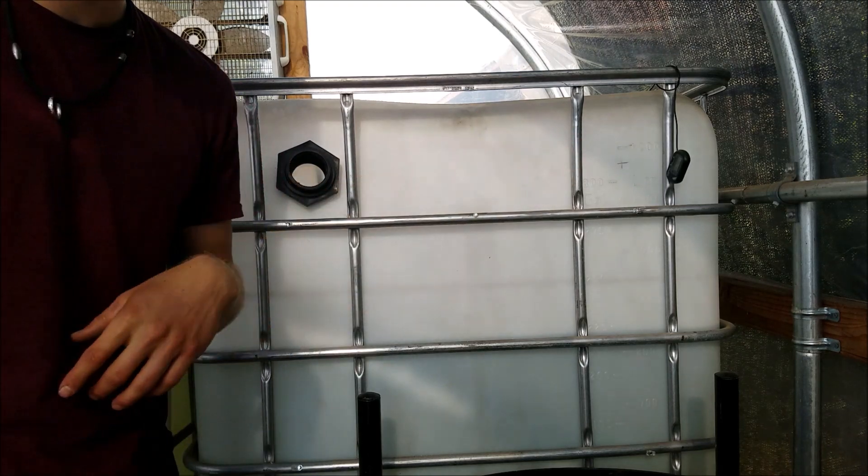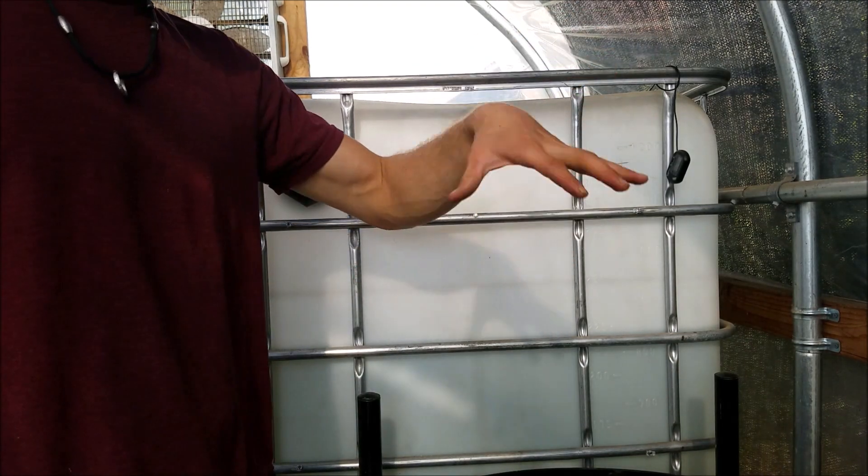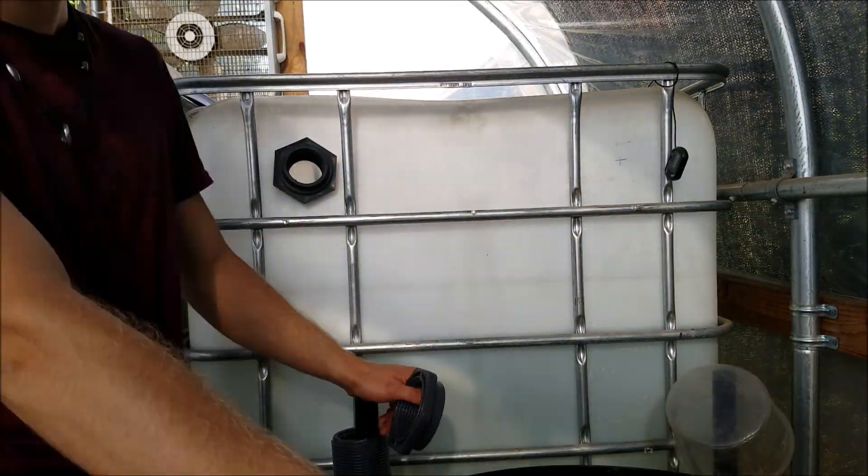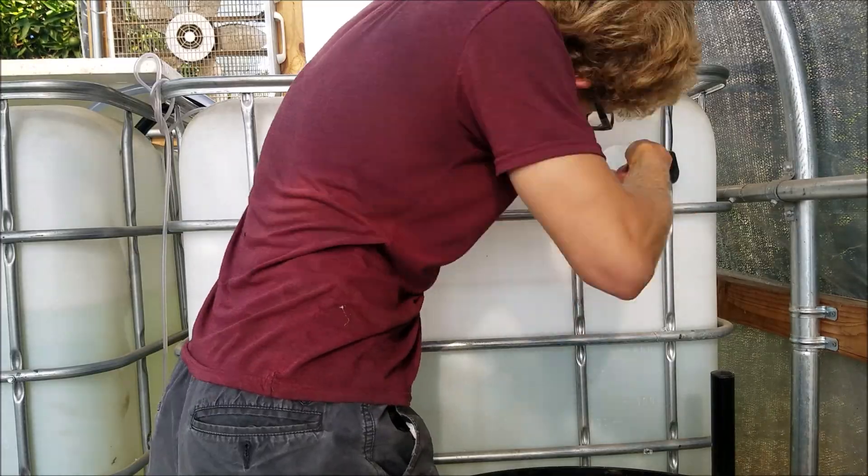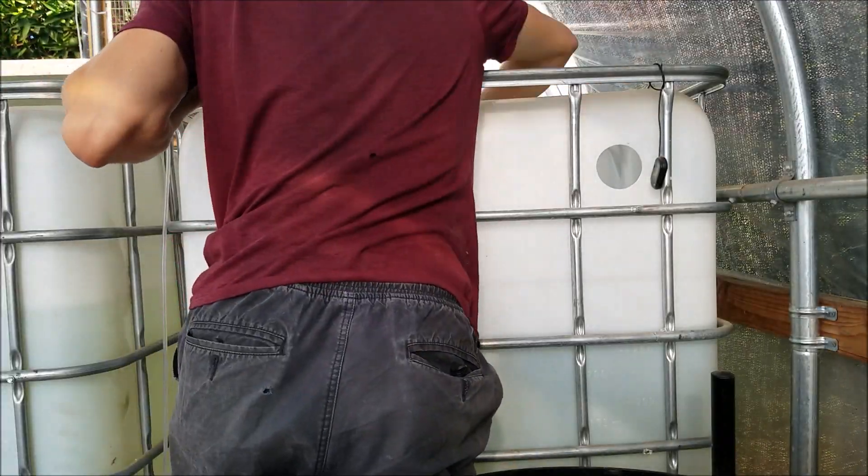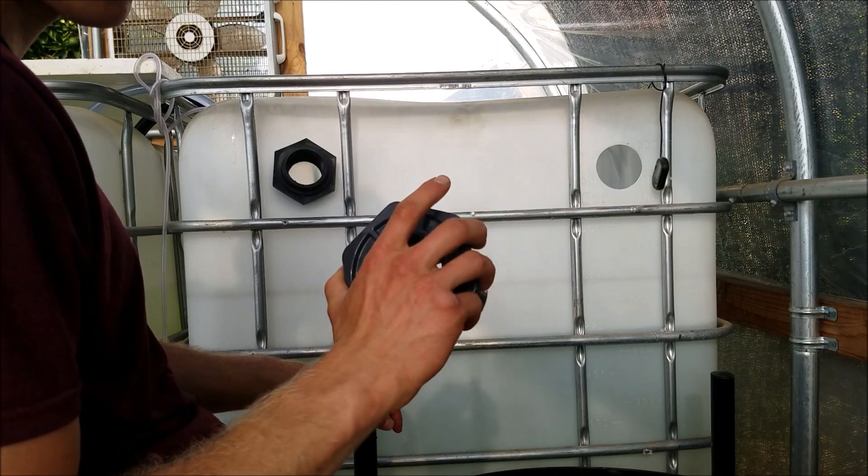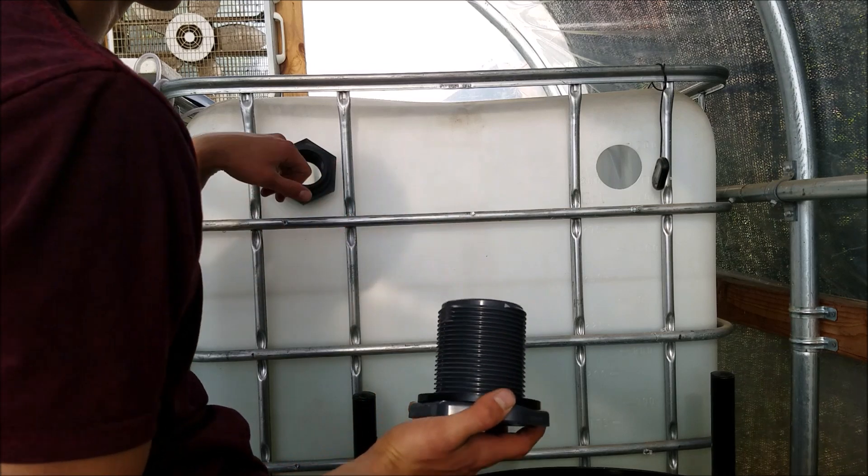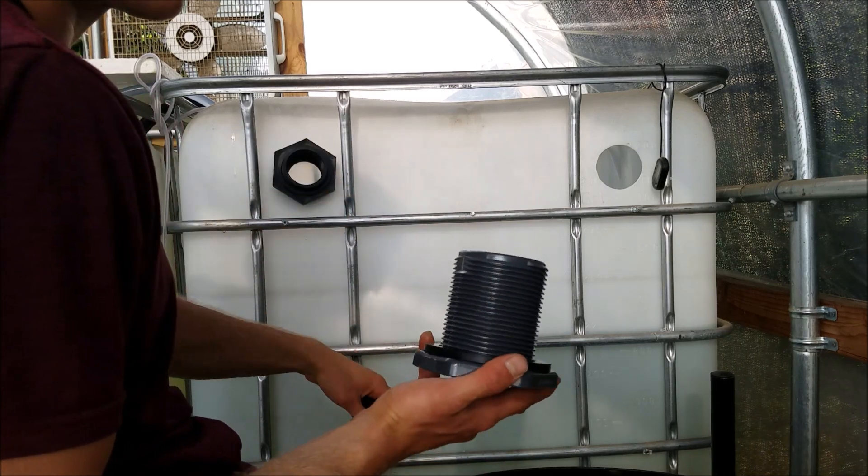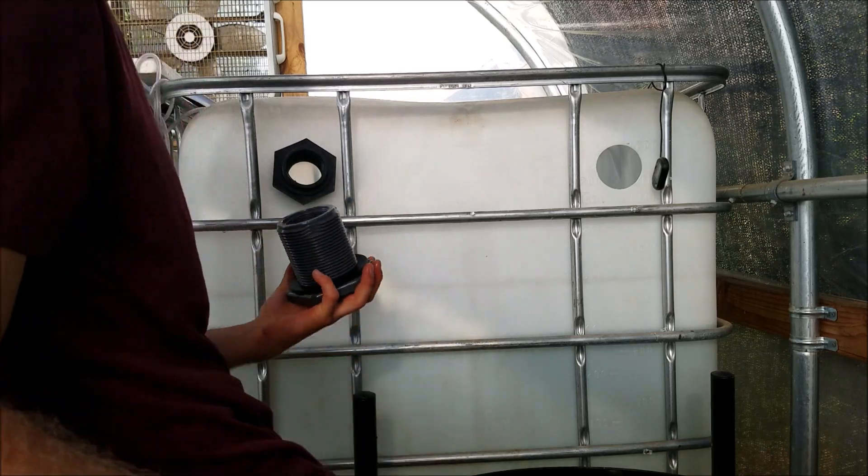Now I also need to drill a hole over there, basically an overflow to go into the filter. I have this bigger uniseal I got for free, but it has a bigger hole size than these ones and I don't have a bigger hole saw, so I'm going to see if it still works if I just thread it in there.